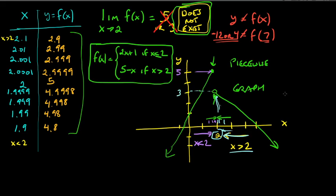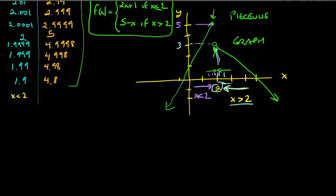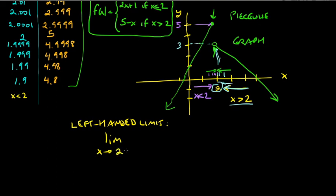So I hope that helps. Looking ahead a little, we can define one-sided limits. The left-handed limit uses a minus sign: the limit as x approaches 2 from the left — meaning x is less than 2, coming from the negative side.